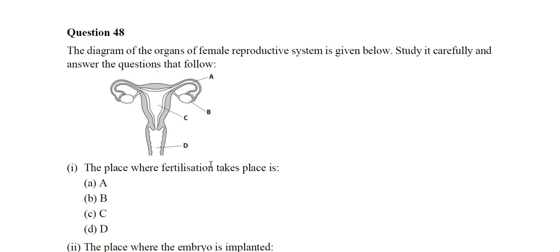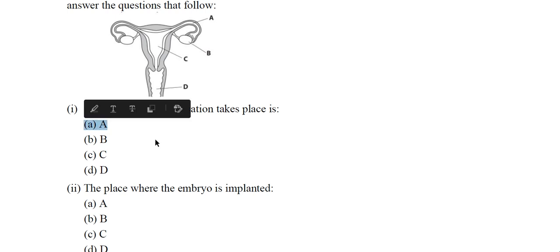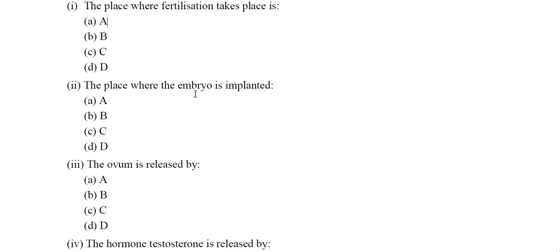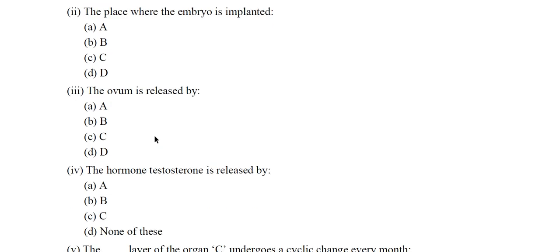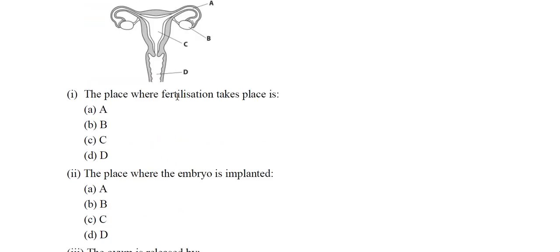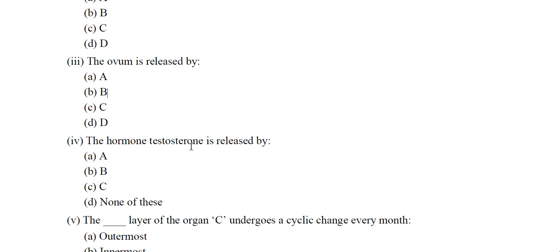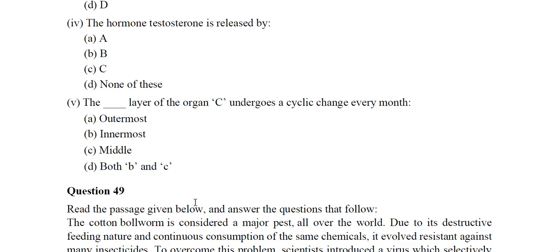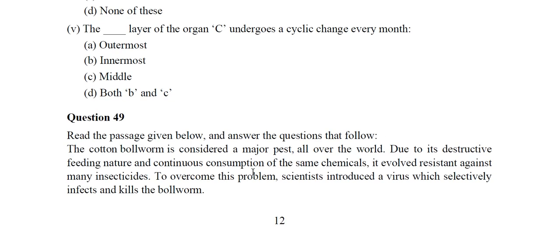Question 48: A diagram of the female reproductive system is given. The place where fertilization takes place is the fallopian tube, option A. The place where the embryo is implanted is option C — the uterus. The ovum is released by B — the ovary. The hormone testosterone is not released here — option D, none of these, as testosterone is a male sex hormone. The innermost layer of organ C is the endometrium, which undergoes cyclic changes every month.